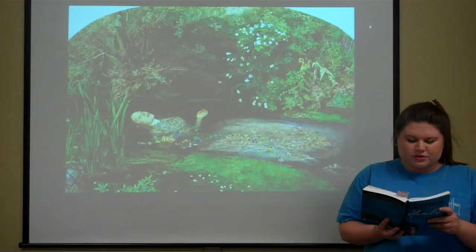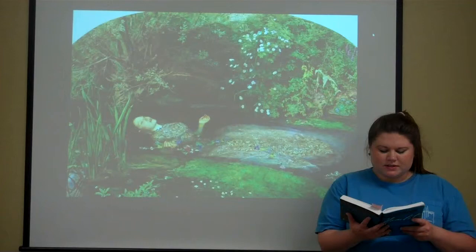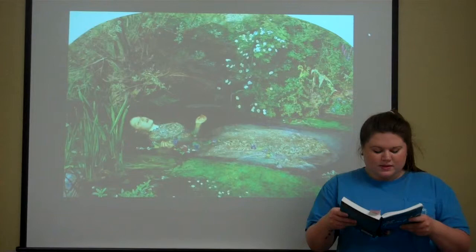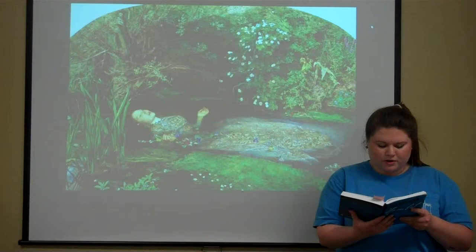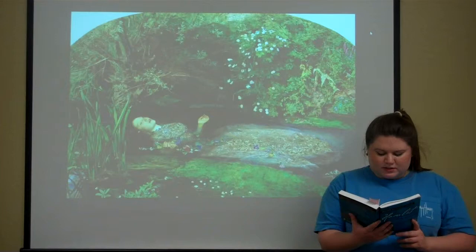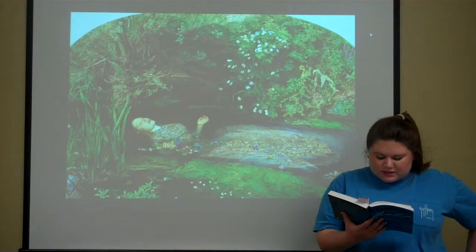Queen Gertrude: 'One woe doth tread upon another's heel, so fast they follow. Your sister's drowned, Laertes.' Laertes: 'Drowned? O, where?' Queen Gertrude: 'There is a willow grows aslant a brook that shows his hoar leaves in the glassy stream. There with fantastic garlands did she come, of crowflowers, nettles, daisies, and long purples. But our cold maids do dead men's fingers call them. There on the pendent boughs her coronet weeds clambering to hang, an envious sliver broke, when down her weedy trophies and herself fell in the weeping brook. Her clothes spread wide, and mermaid-like a while they bore her up, which time she chanted snatches of old lauds, as one incapable of her own distress, or like a creature native and endued unto that element. But long it could not be till that her garments, heavy with their drink, pulled the poor wretch from her melodious lay to muddy death.'